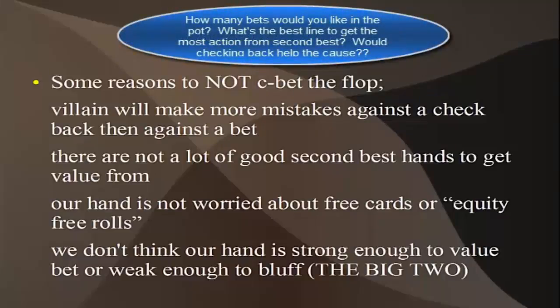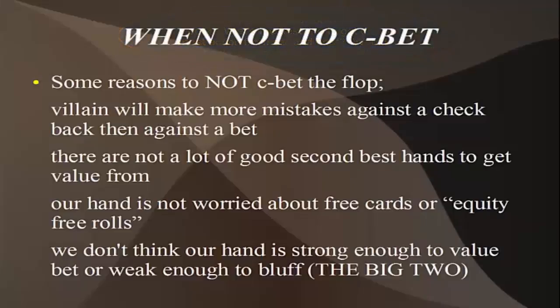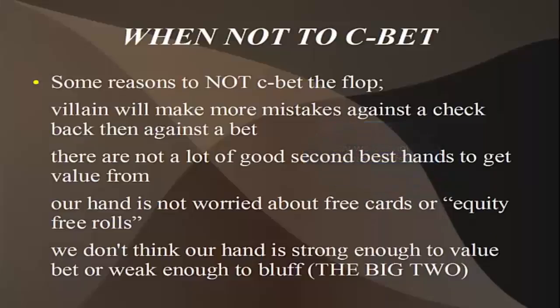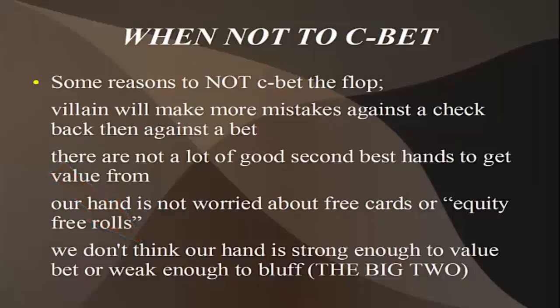I'm not saying we should be checking back our huge monster value hands hoping our opponent decides we have nothing and goes off with second pair. I'm just saying sometimes you have a hand where it's kind of hard for your opponent to make a lot of mistakes against if you bet, but if you check back, maybe it's not going to be so hard. Here's what it comes down to: if there's really not going to be a lot of good second-best hands in your opponent's range that you can get value from, then you're not really value betting. And another reason to skip the c-bet is that our hand is not really worried about giving our opponent a free roll on their equity.